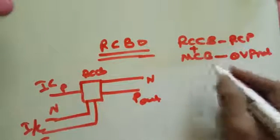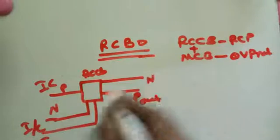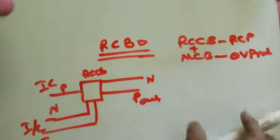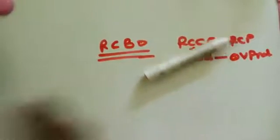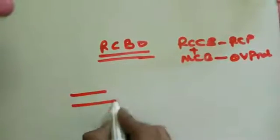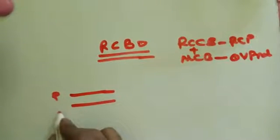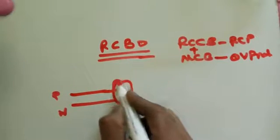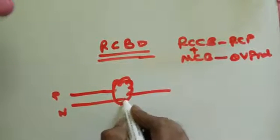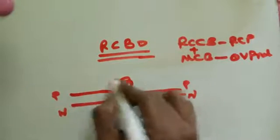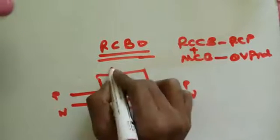We make two things in one module called RCBO. First, let me show you RCCB. The phase goes like this and neutral like this - this is inside the RCB, phase and neutral.